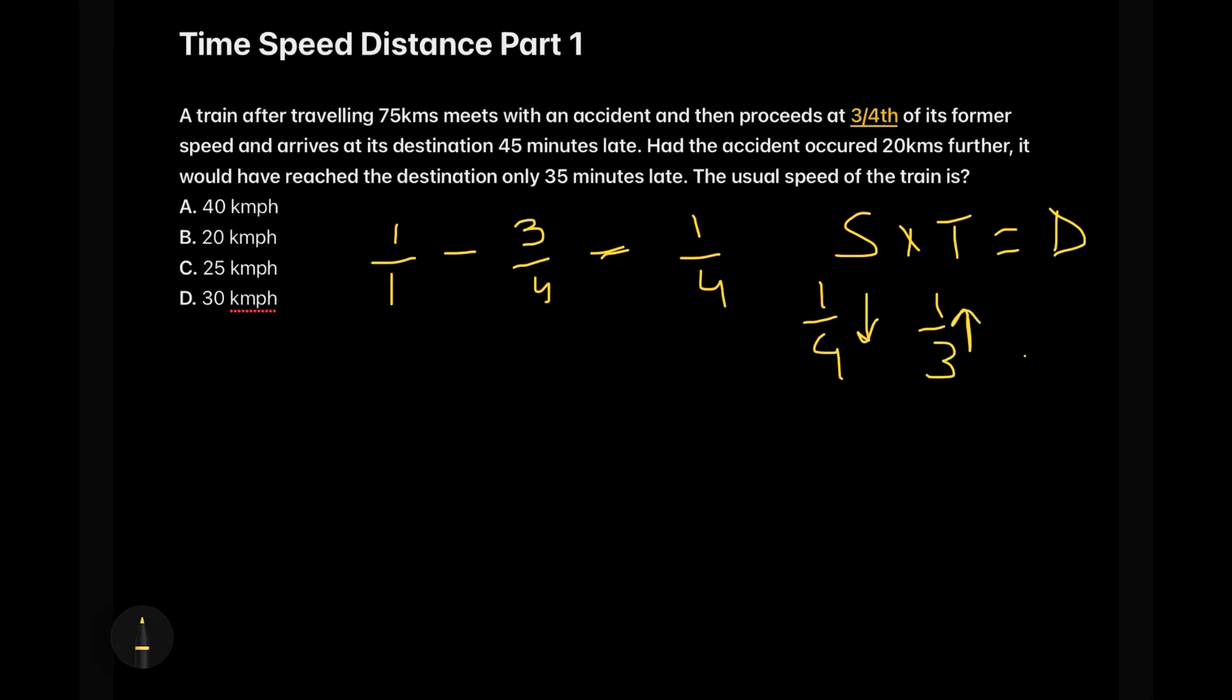So this relation is what we learned in the concept video that an increase of one by x leads to a decrease of one by x plus one. So this is the relation which we learned in the previous video and we'll be applying the same concept here. So we know that a speed when decreased by one by fourth leads to an increase in the time by one by three.